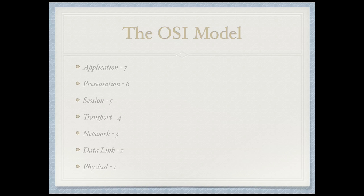When it comes time for the tests, not everyone can remember these just using the actual names of the layers themselves. So we've got two different mnemonics here that we'll be using to help you remember the individual layers in the order that they come. The first one is: all people seem to need data processing. This actually starts at layer 7 and works its way down to layer 1.